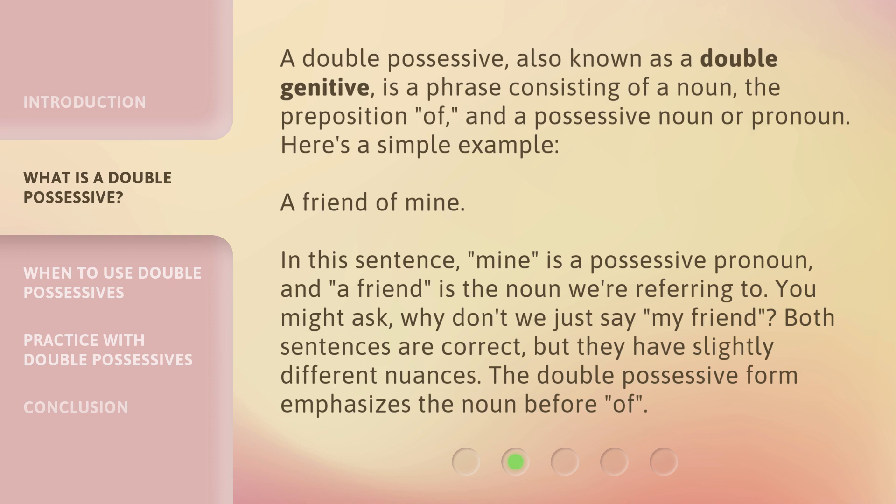A double possessive, also known as a double genitive, is a phrase consisting of a noun, the preposition 'of,' and a possessive noun or pronoun. Here's a simple example: 'a friend of mine.' In this sentence, 'mine' is a possessive pronoun, and 'a friend' is the noun we're referring to. You might ask, why don't we just say 'my friend'? Both sentences are correct, but they have slightly different nuances.